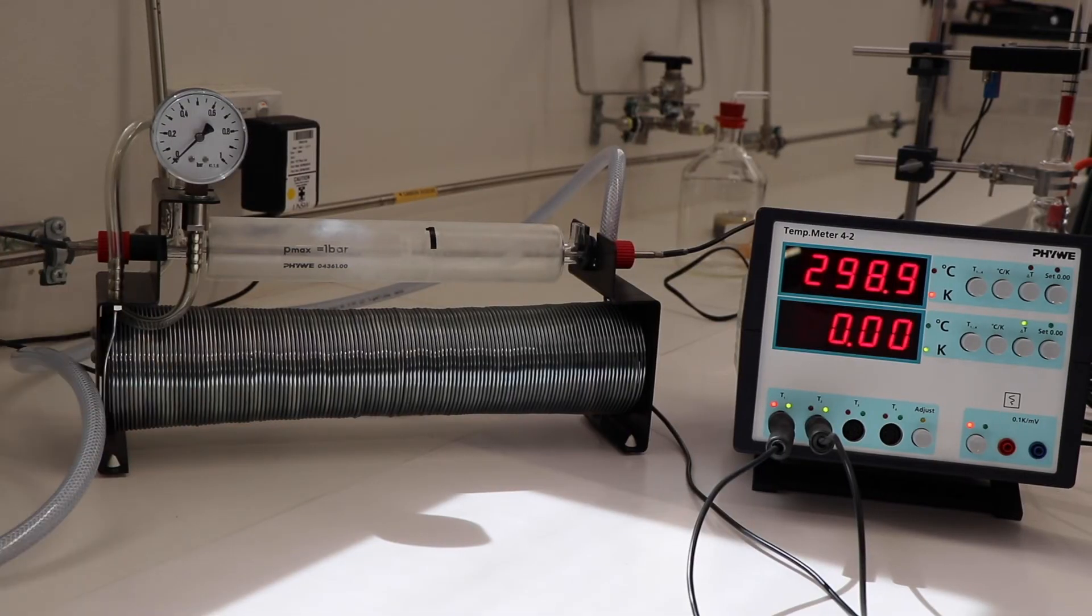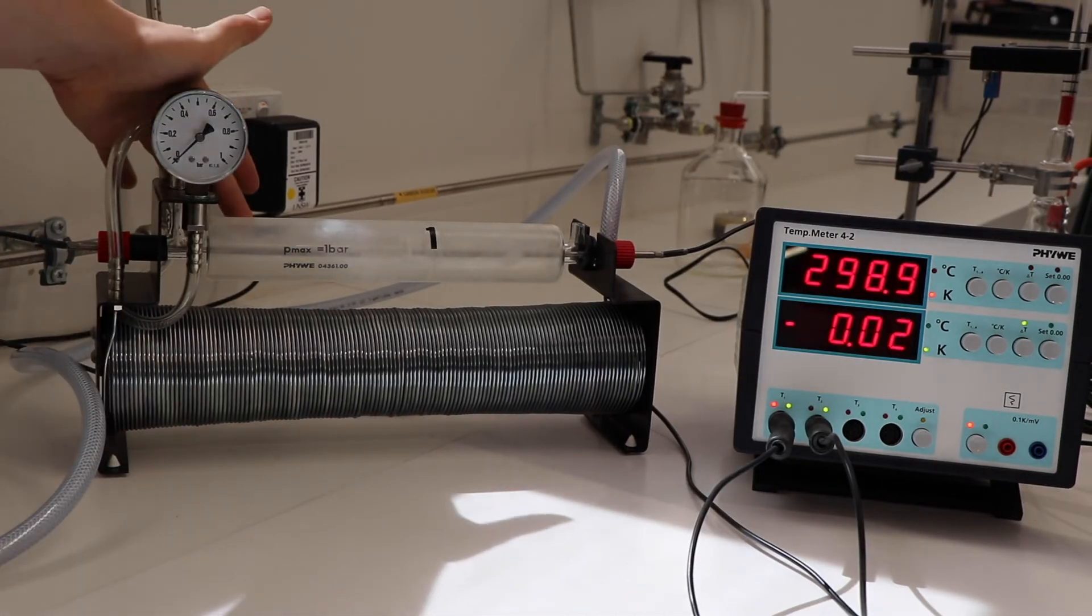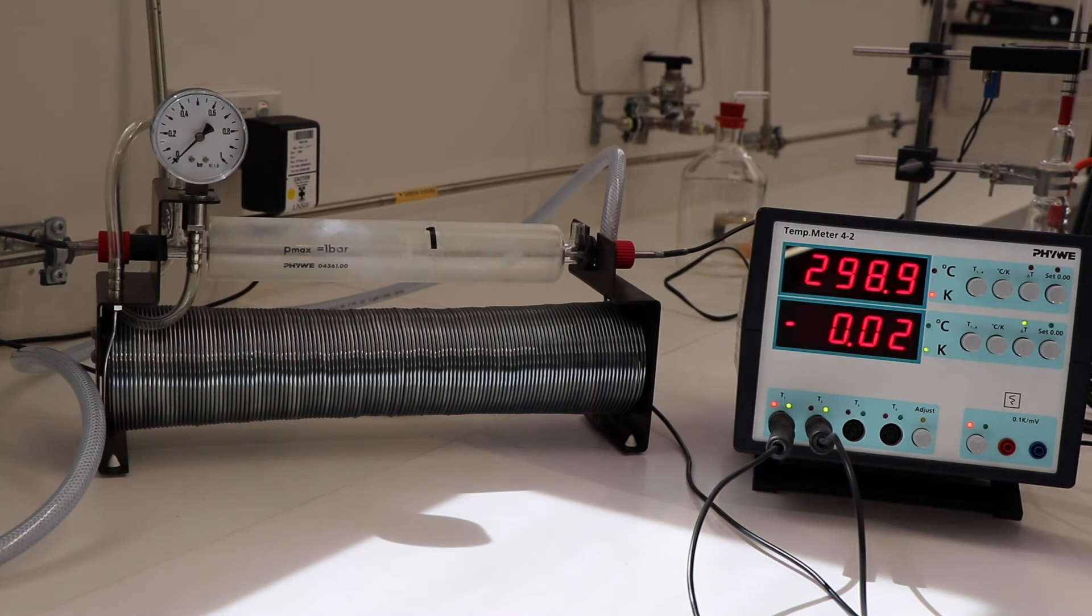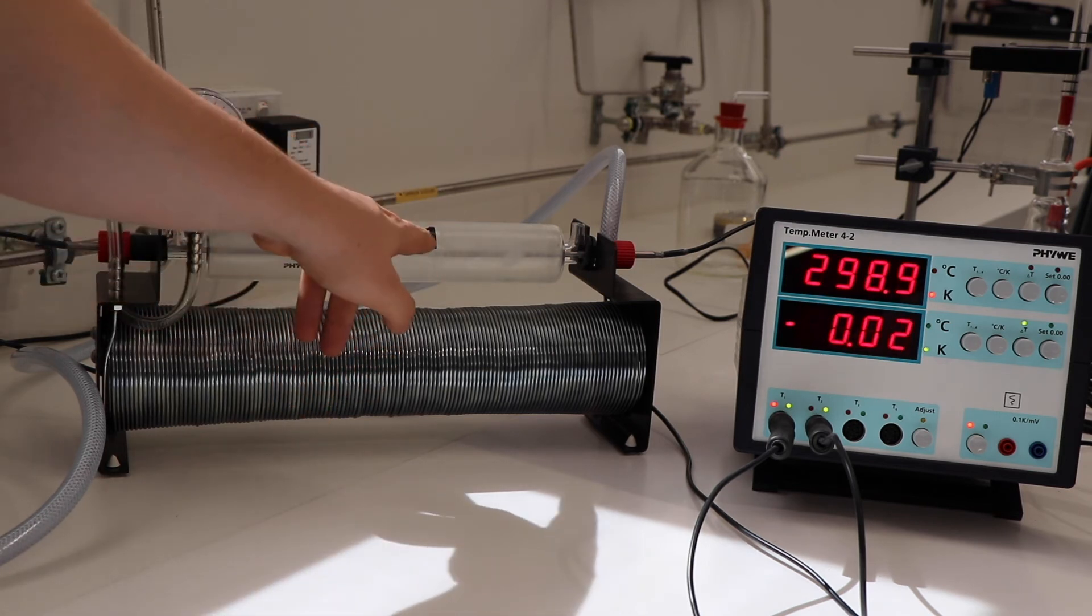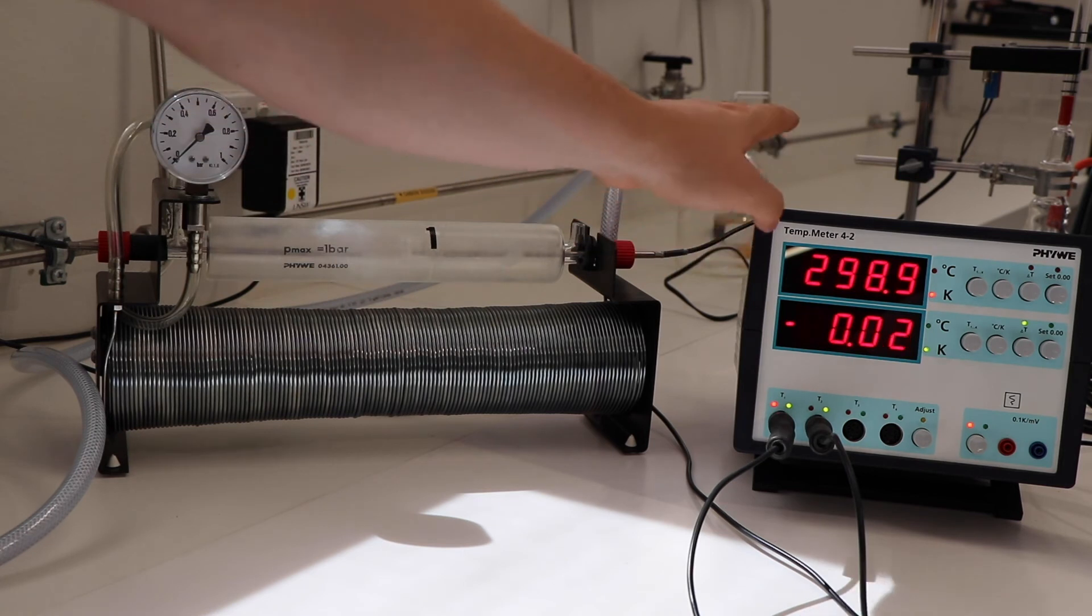To perform this lab, we need to supply our tube with gas from the two suppliers. The pressure of the tube is measured by the manometer and the temperature is measured by the two probes here, which are then connected to our temperature meter.